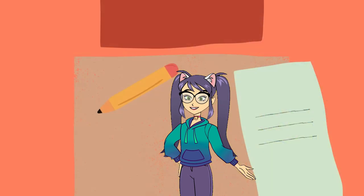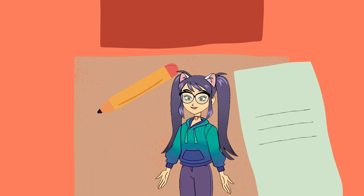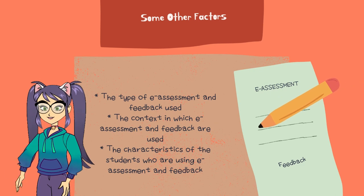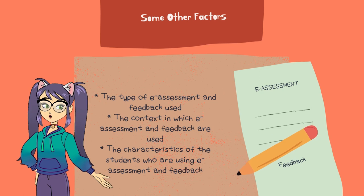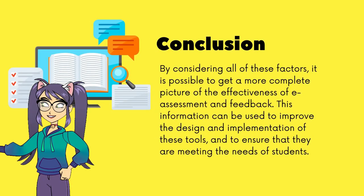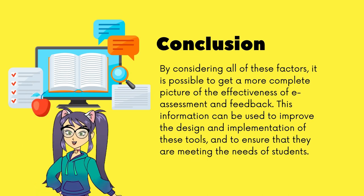In addition to the methods mentioned above, there are a number of other factors to consider when evaluating the effectiveness of e-assessment and feedback. These factors include the type of e-assessment and feedback used, the context in which they are used, and the characteristics of the students using them. By considering all of these factors, it is possible to get a more complete picture of their effectiveness and ensure that they are meeting the needs of students.